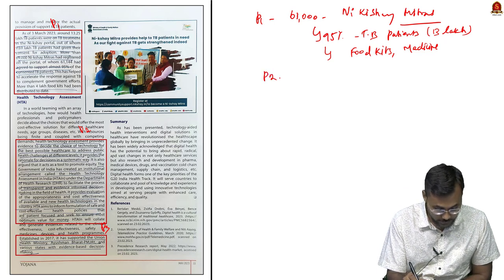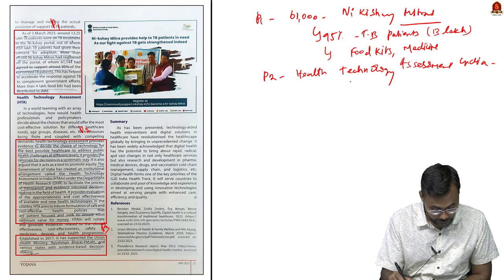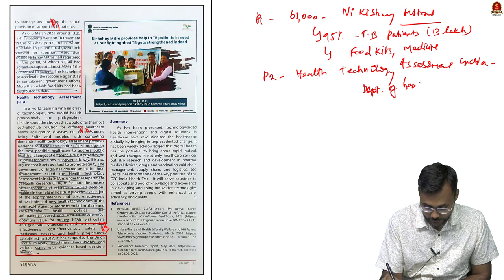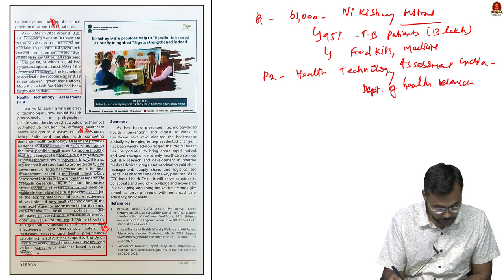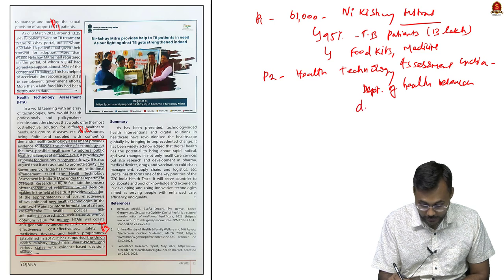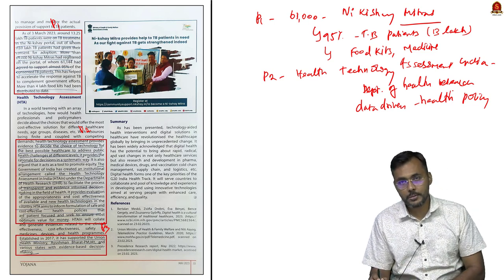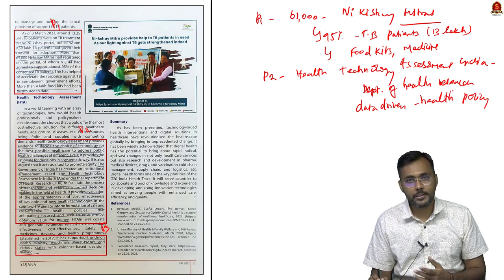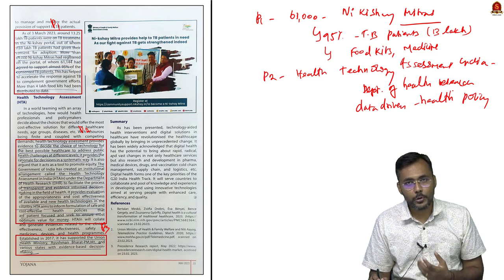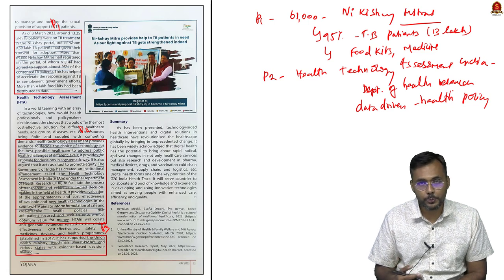Paragraph 2 speaks about Health Technology Assessment India, which is part of the Department of Health Research. Its primary focus is data-driven health policies — collecting all data and making health policy choices based on that data. This shows that the government is moving towards more efficient health services rather than creating policies based on hunches.